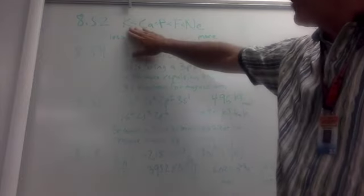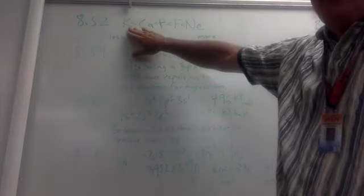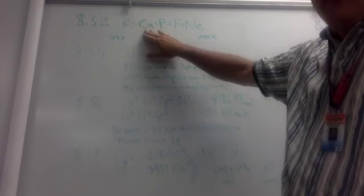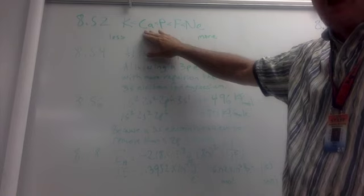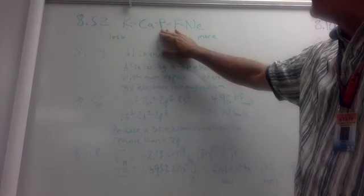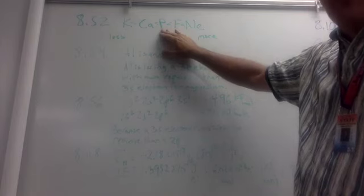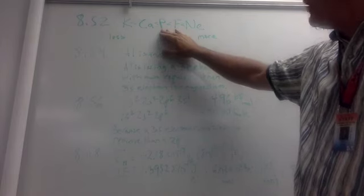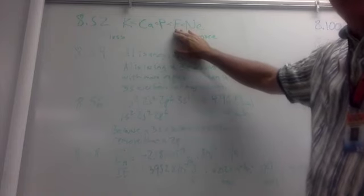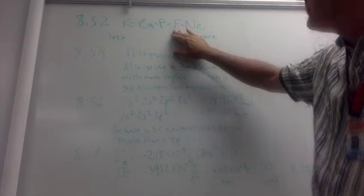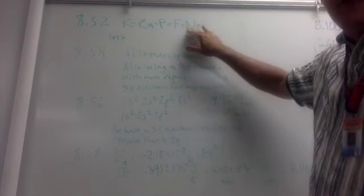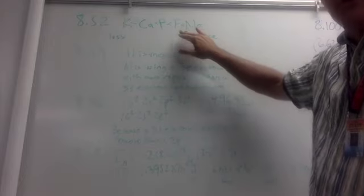So potassium on the far left should be the lowest ionization energy, followed by calcium, which is immediately to its right. And then over on the right, we have phosphorus, which because its electron is in the third level, will have a lower ionization energy than fluorine. Fluorine's electron is in the second level, and fluorine will be less than neon because neon has more nuclear charge than fluorine.